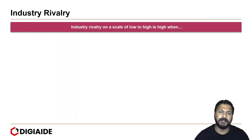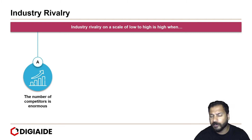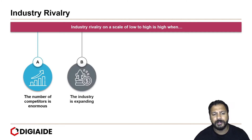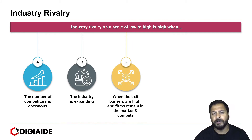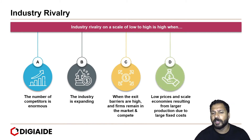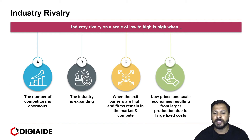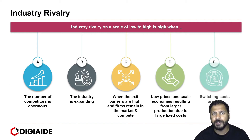Industry Rivalry on a scale of low to high is high when: the number of competitors is enormous; the industry is expanding; exit barriers are high and firms remain in the market and compete; low prices and economies of scale result from larger production due to large fixed costs; and finally, switching costs for consumers are low.